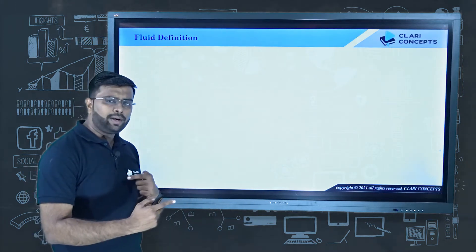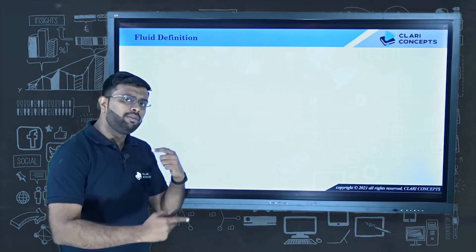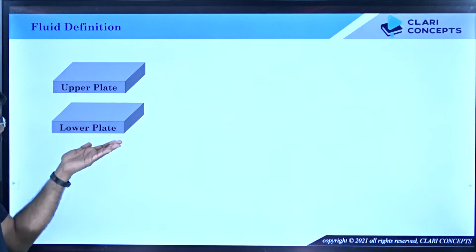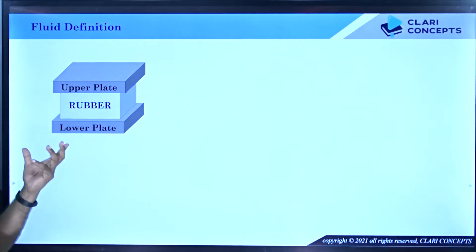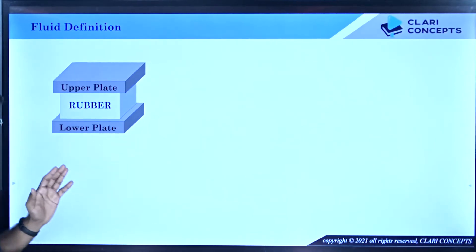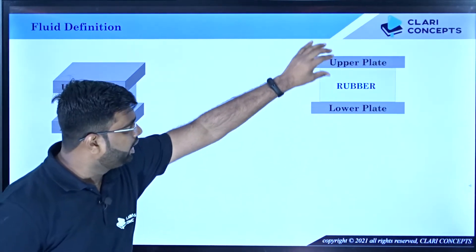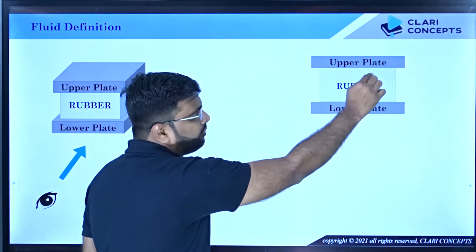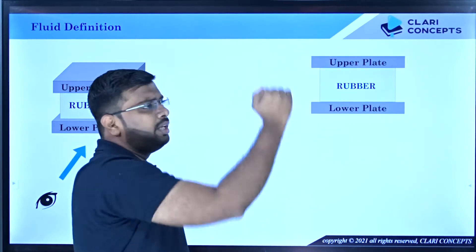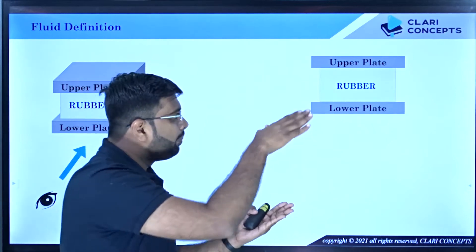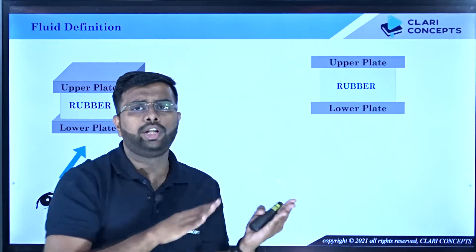To understand the definition of fluid, we perform an experiment with two plates — a lower plate and an upper plate — with rubber material packed between them. Seen from the front, we have the lower plate, rubber in the middle, and the upper plate. The rubber surface is glued to both plates so there is no relative motion.